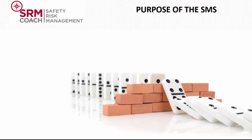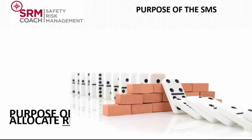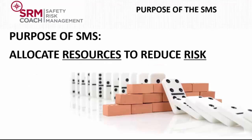From the previous lectures, we can now see that we need a tool to measure our safety performance. This tool should allow us to manage safety in a proactive manner, to reduce the likelihood of an accident to an acceptable level. This system needs to look at the technical, human, and organizational factors that can cause accidents, and improve risk controls that defend the system against those accidents. These risk controls cost resources, and our organization can only dedicate so much to protection. So another very important function of the system is to prioritize which risks need to be addressed first. In short, the purpose of the SMS is to allocate resources to reduce risk.